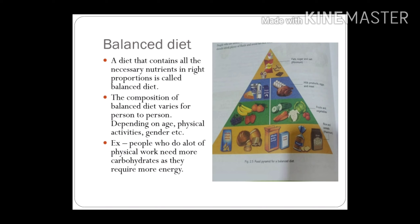Here you can see a food pyramid, which shows that you should eat minimum fat, sugar, and salt, then milk products, eggs, and meat, then fruits and vegetables, and maximum rice and cereals.